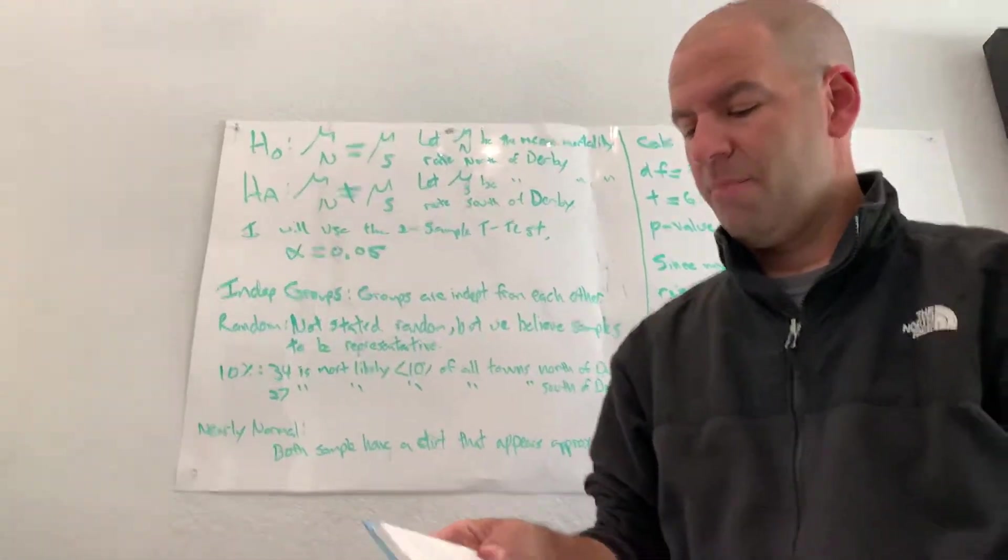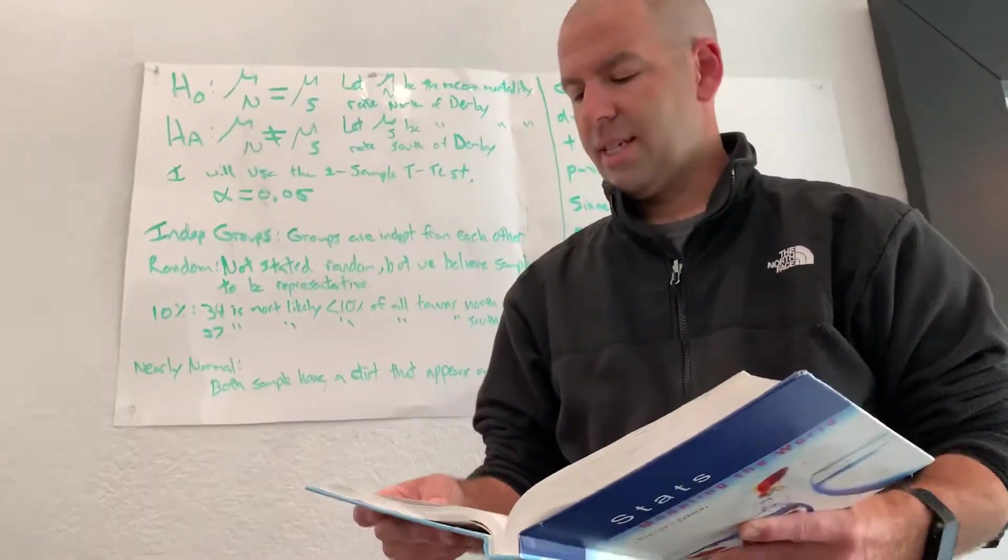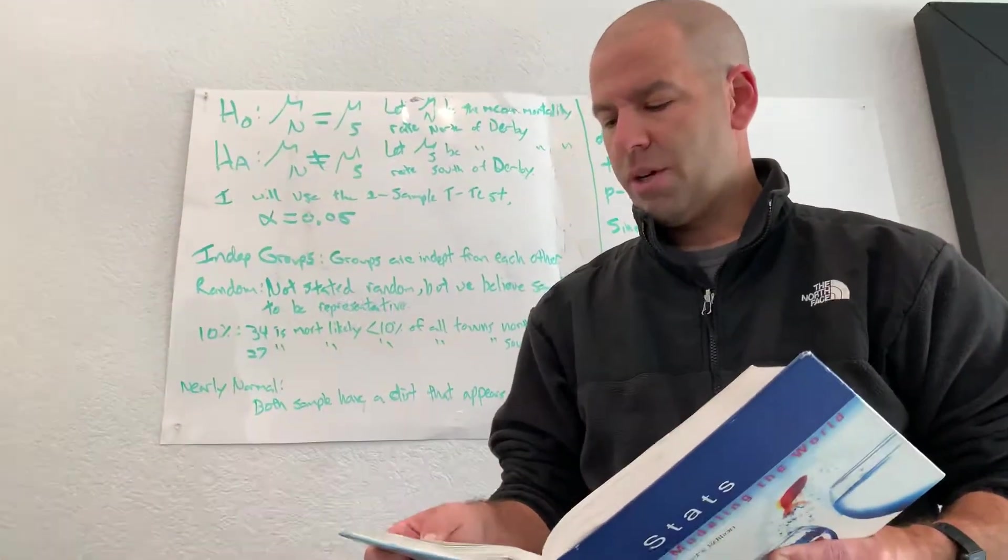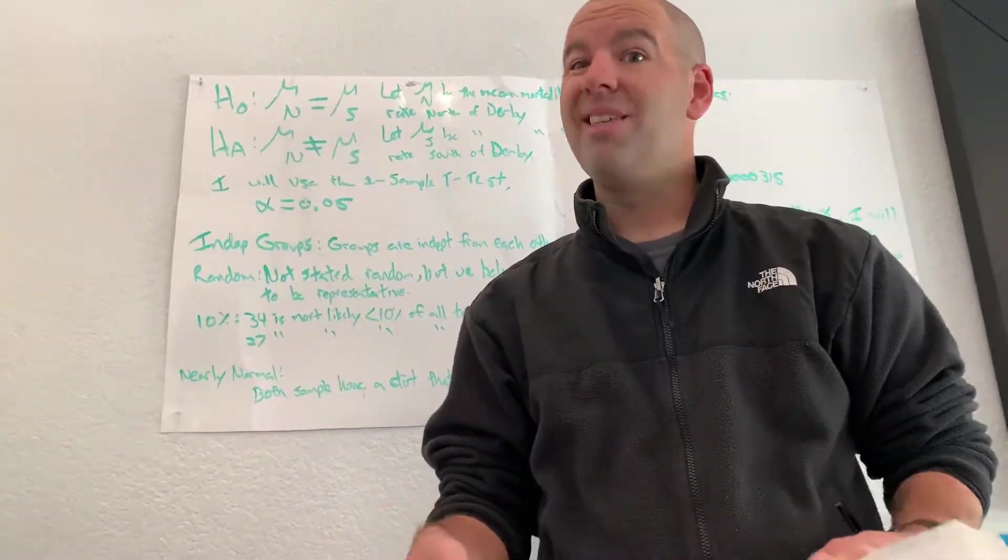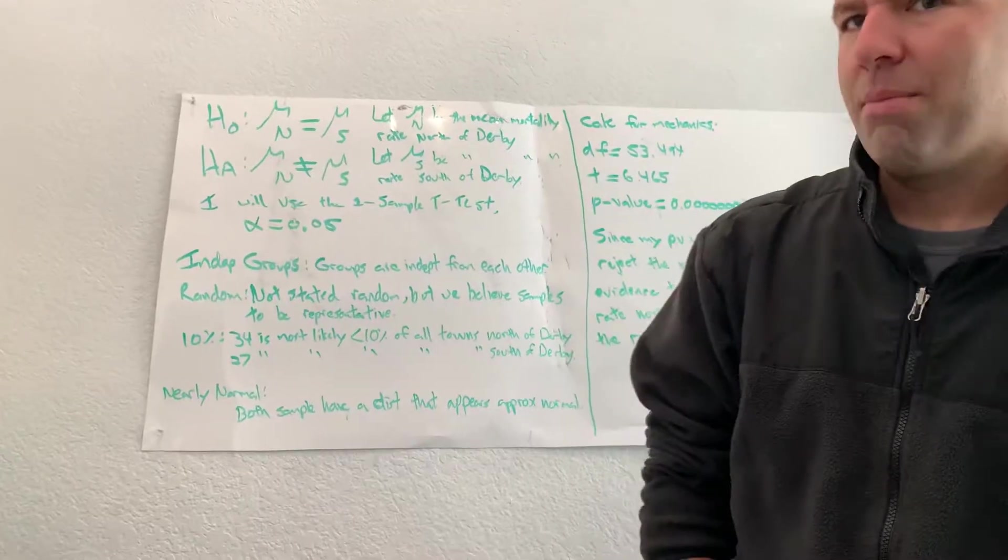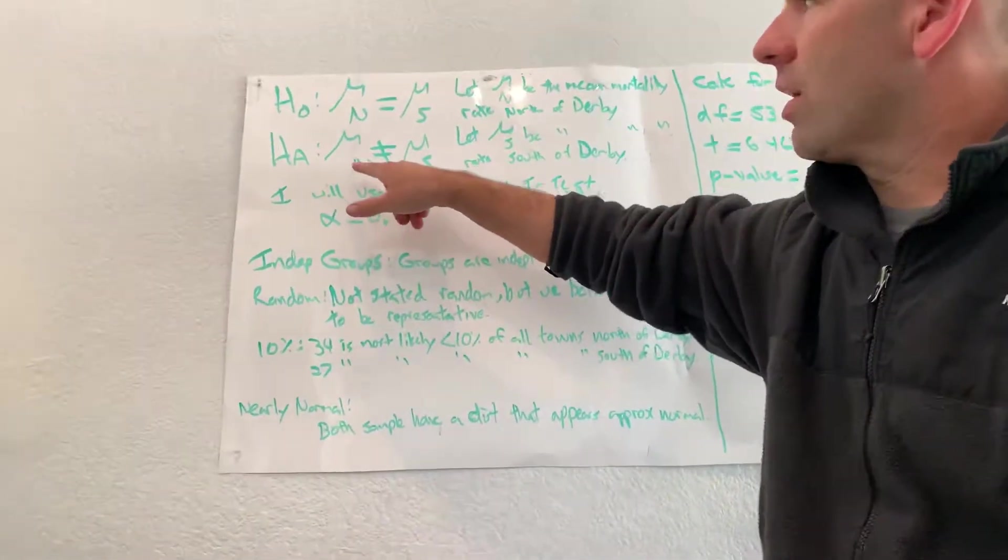But they want us to—part A says to do an appropriate hypothesis test. The question said 'is there a significant difference in mortality rates?' Difference, not greater than or less than, but difference. So we assume that they're equal to each other, but we are going to see if they're different from each other.